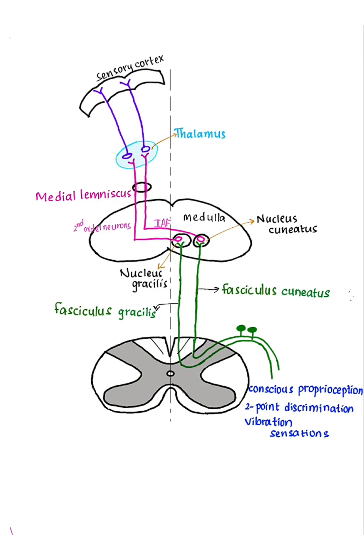The fibers of medial lemniscus ascend through medulla, pons, midbrain and reach the VPL nucleus of thalamus, ventral posterior lateral nucleus of thalamus.